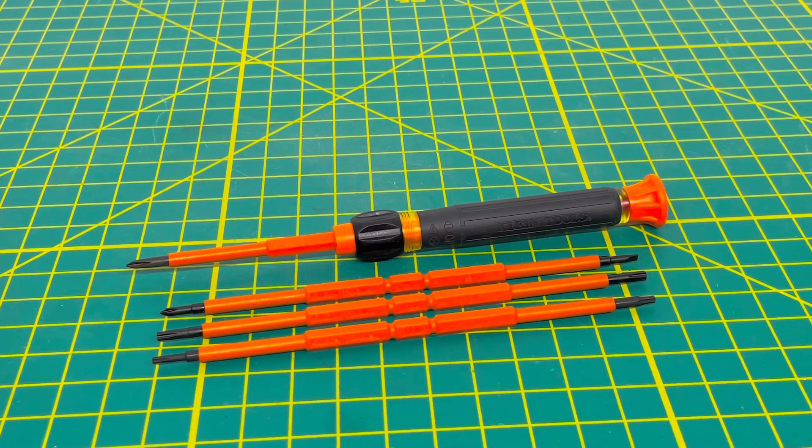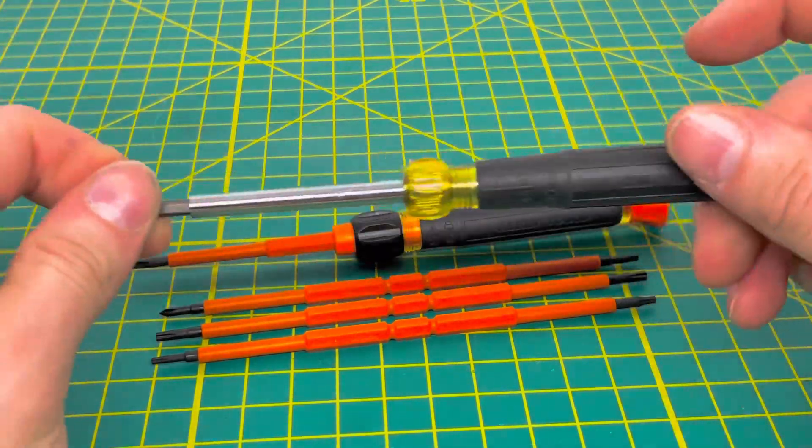Welcome to the tool review channel. For today's video we're taking a look at the Klein Tools 32584 8-in-1 insulated electronic screwdriver. At the time of filming this is a relatively new release from Klein Tools, an insulated version of their standard 4-in-1 screwdrivers.